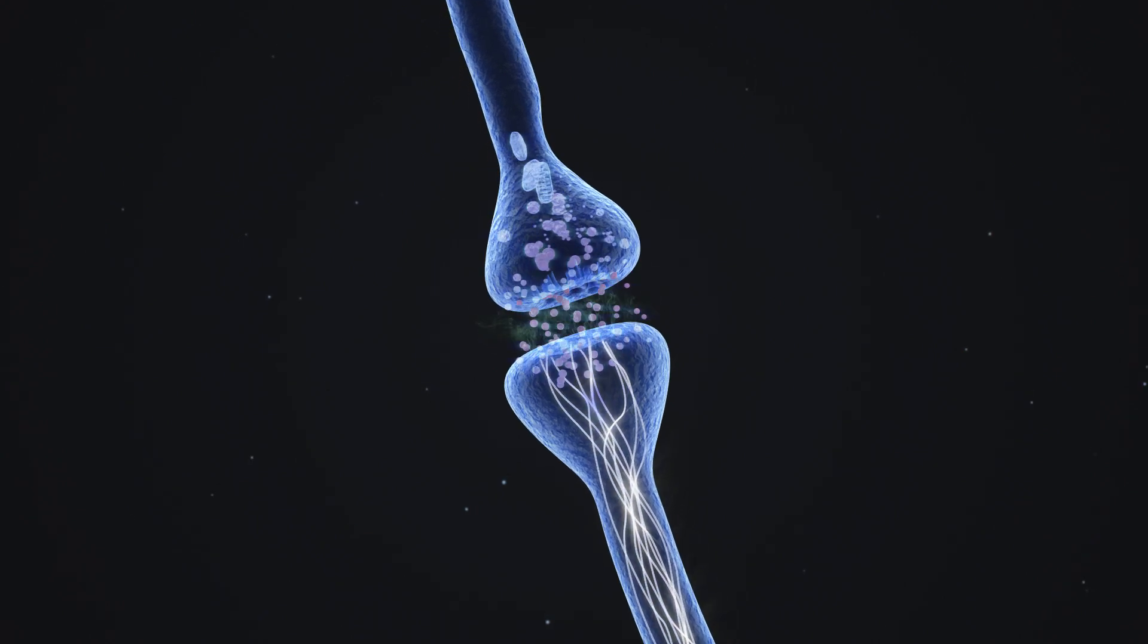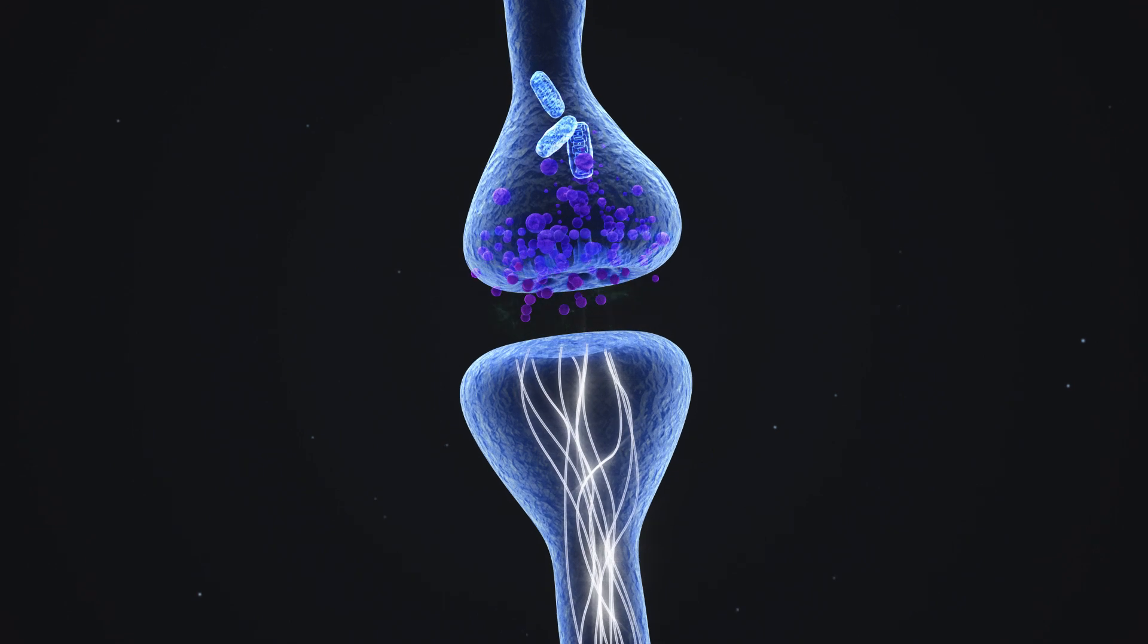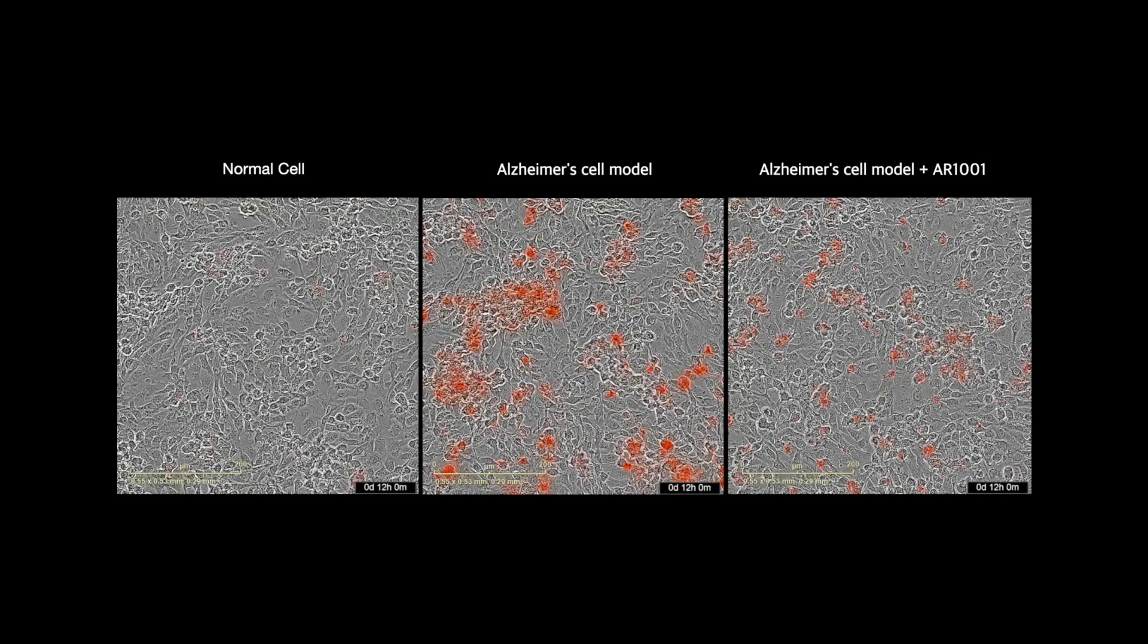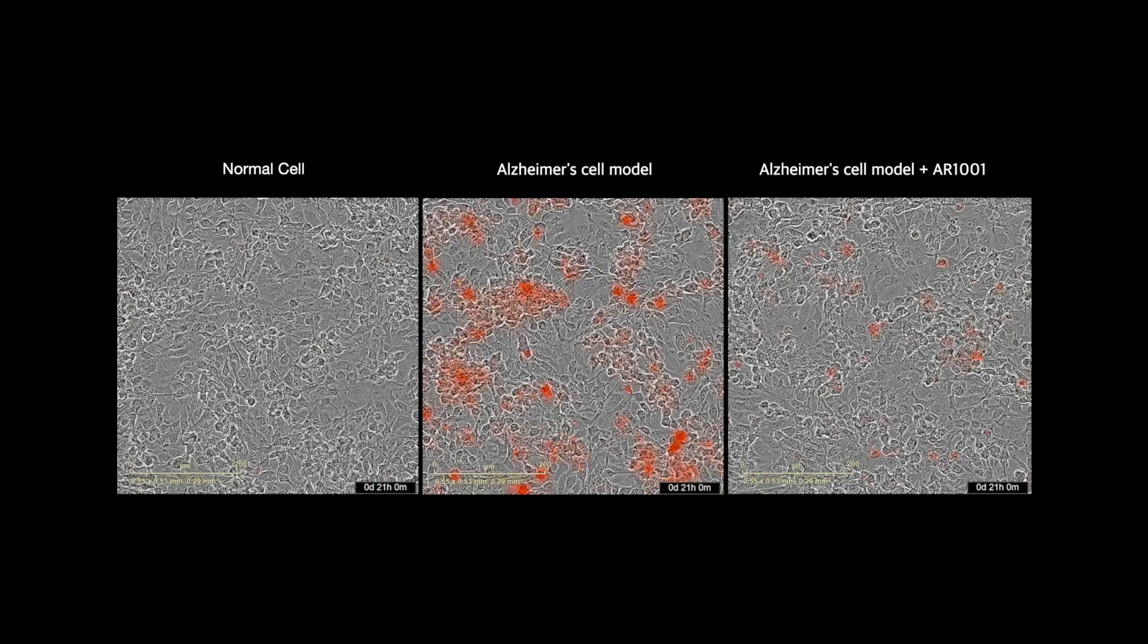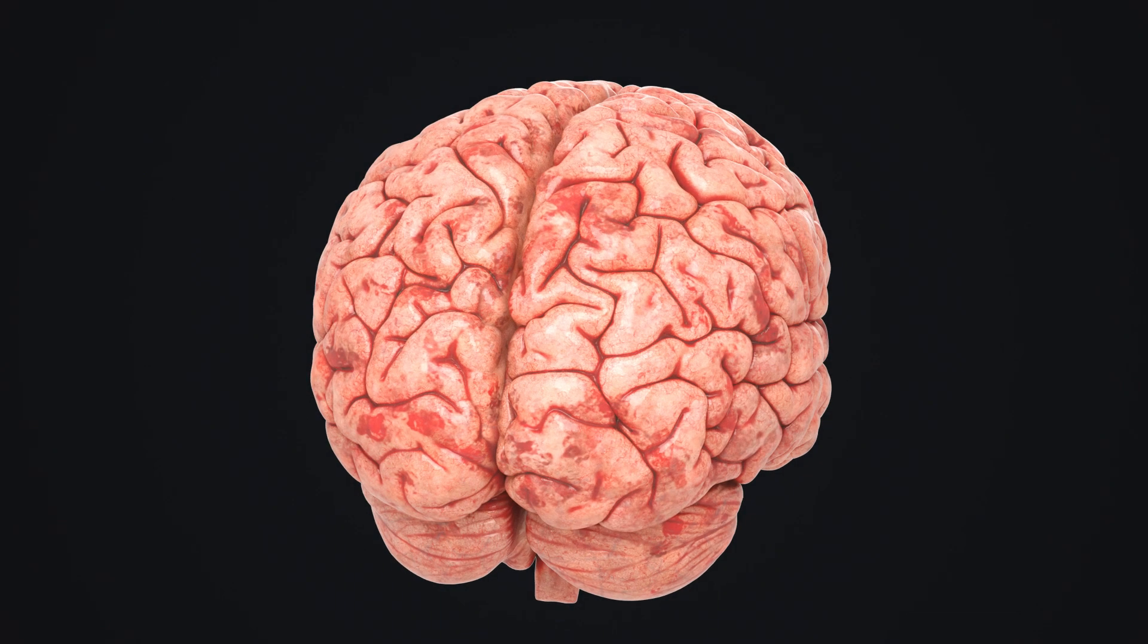Second, AR-1001 restores synaptic plasticity through the activation of the Wnt signaling pathway. Finally, AR-1001 removes toxic proteins such as beta-amyloid and phosphorylated tau through the stimulation of autophagy activity, helping the neurons thrive in a healthier environment.